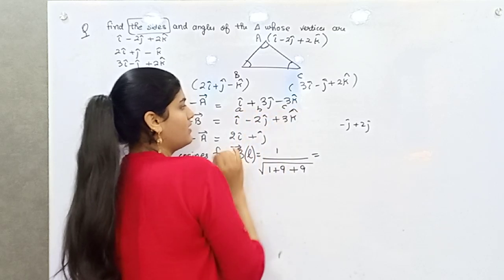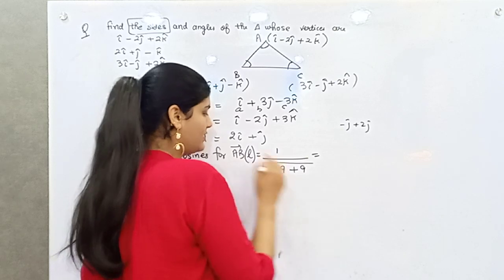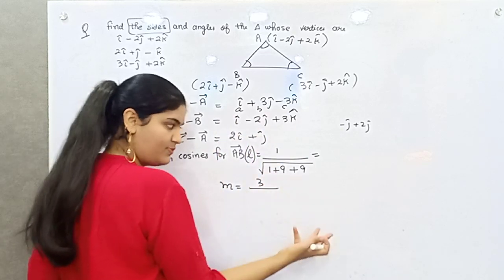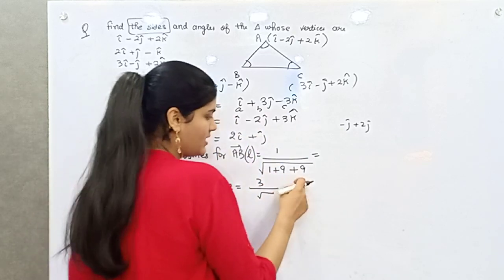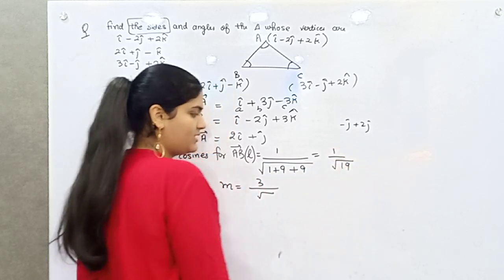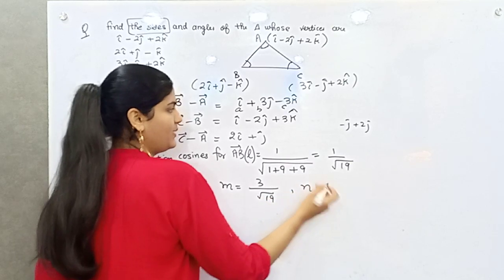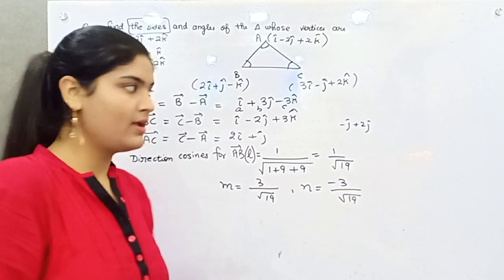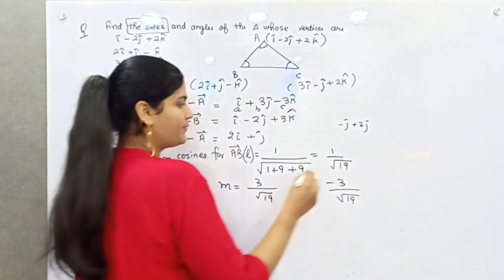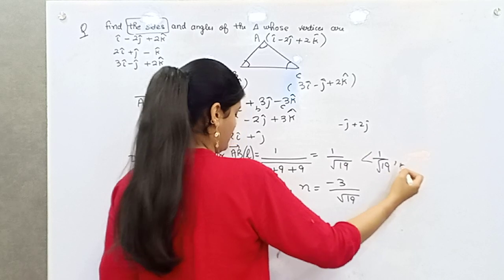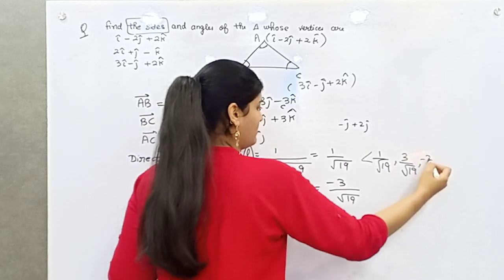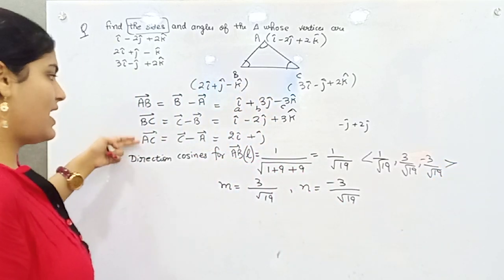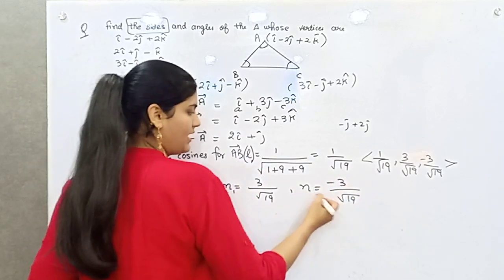Direction cosines are denoted as L, M, N. For a vector with components A, B, C: L = A / √(A²+B²+C²), M = B / √(A²+B²+C²), N = C / √(A²+B²+C²). So for AB: L = 1/√19, M = 3/√19, and N = −3/√19. Similarly, find the direction cosines for BC and AC — let's call them L2, M2, N2 and L3, M3, N3.